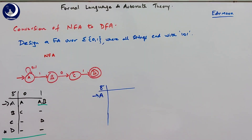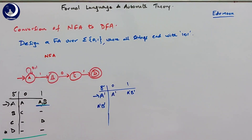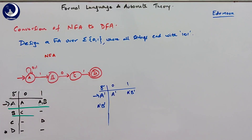The initial state for the equivalent DFA is A, which we call A dash for convenience. Computing the transition of A dash on zero from the NFA table: A dash on zero goes to A dash, but A dash on one goes to A dash and B dash — a new combination. Since this new possibility A dash and B dash is obtained, we take it as the next new state in the DFA table.